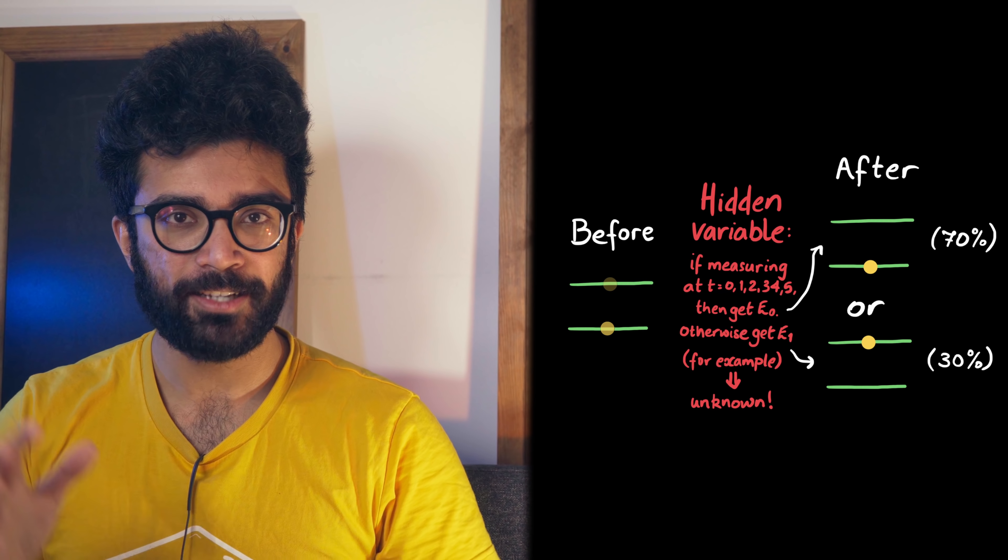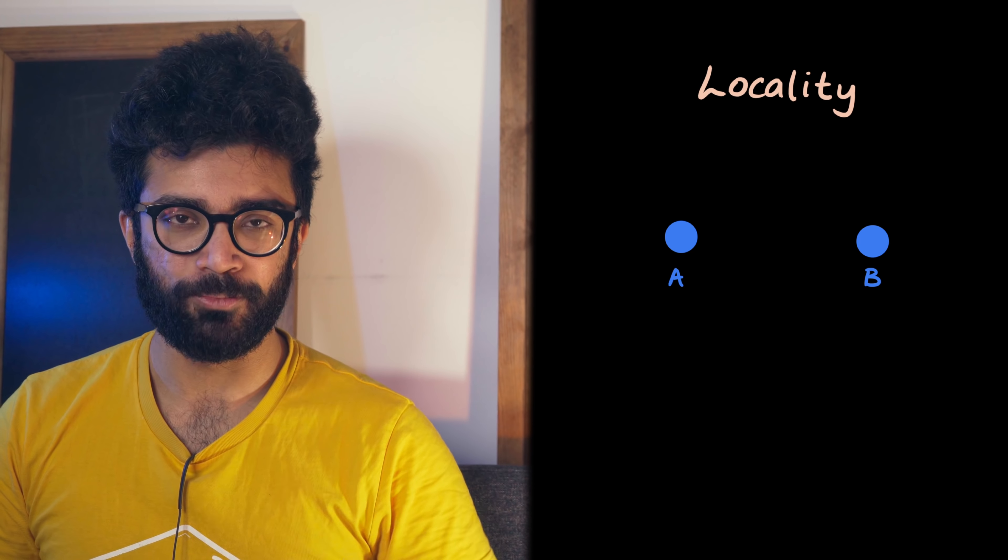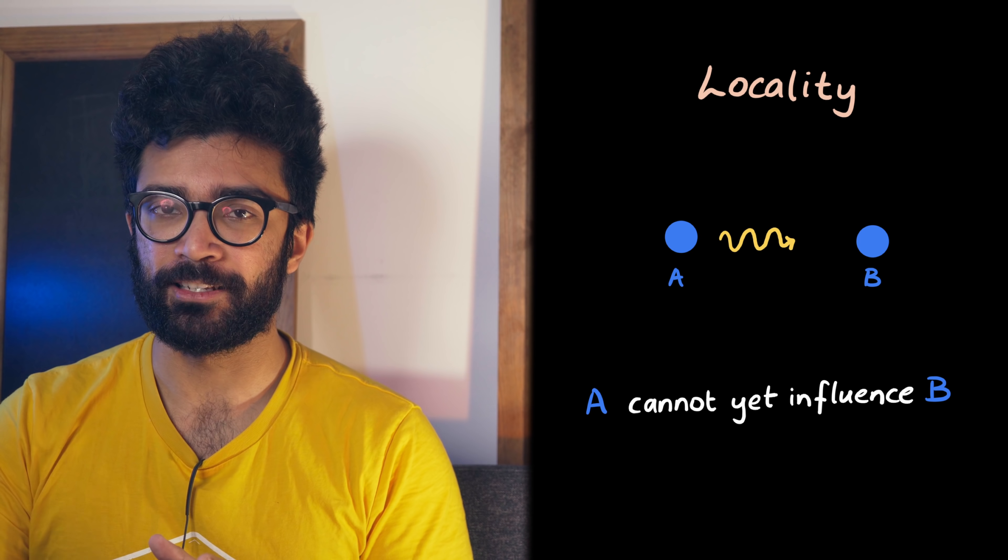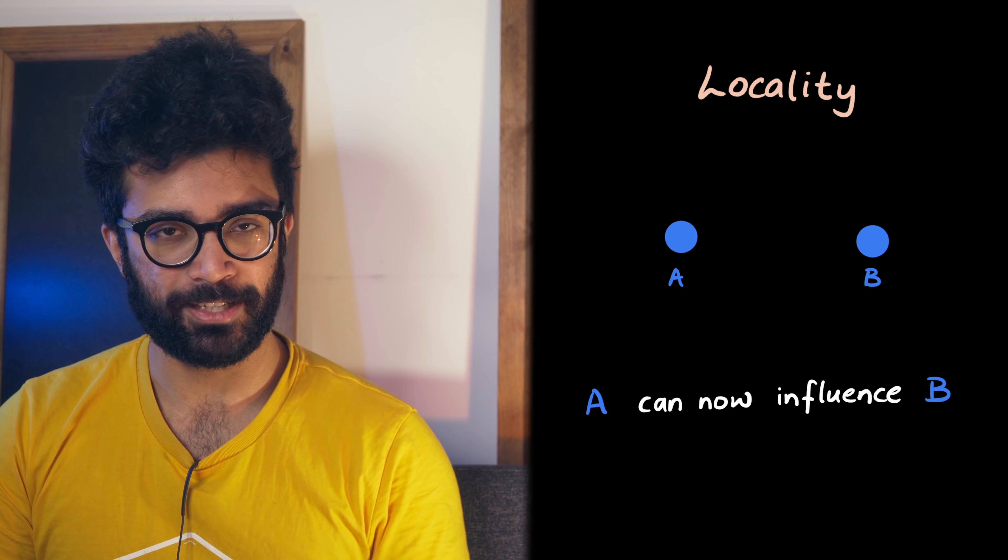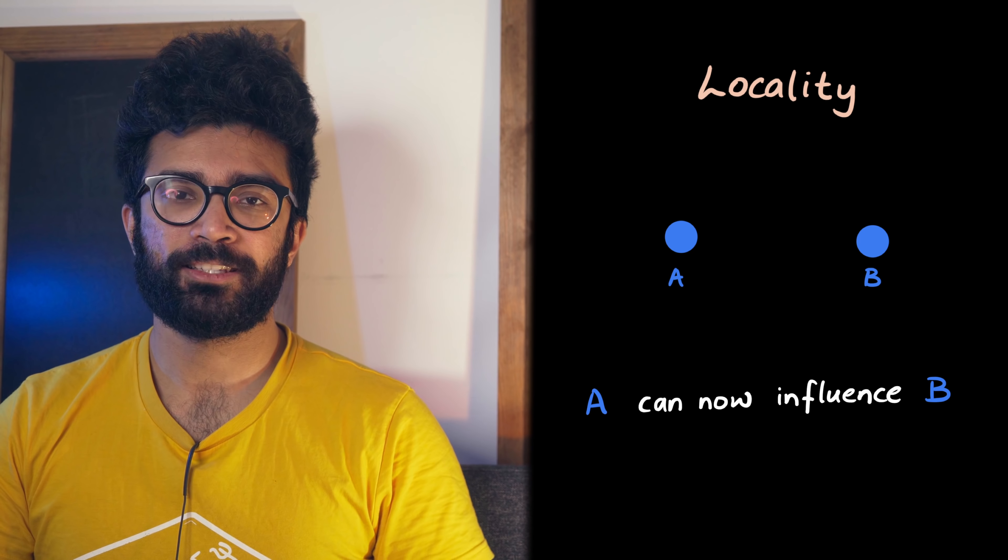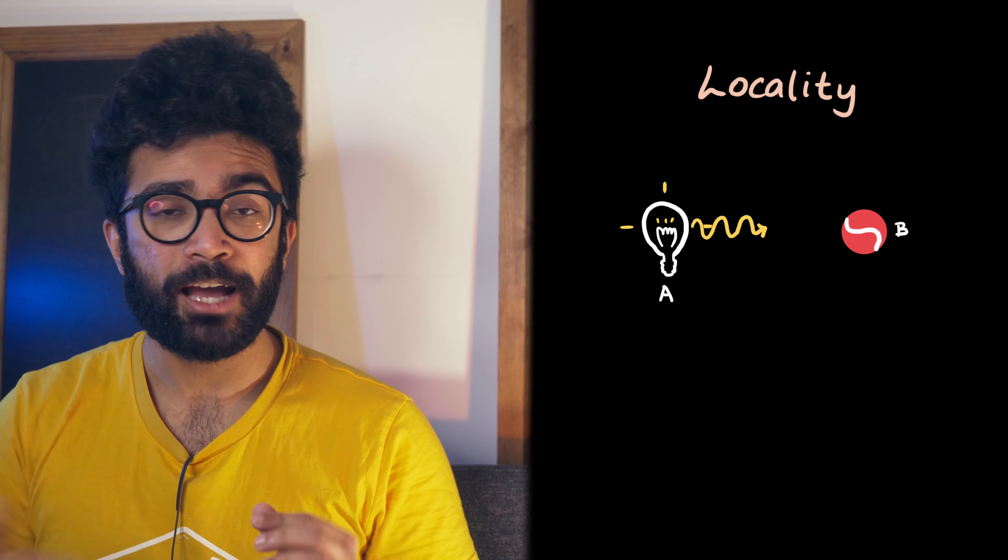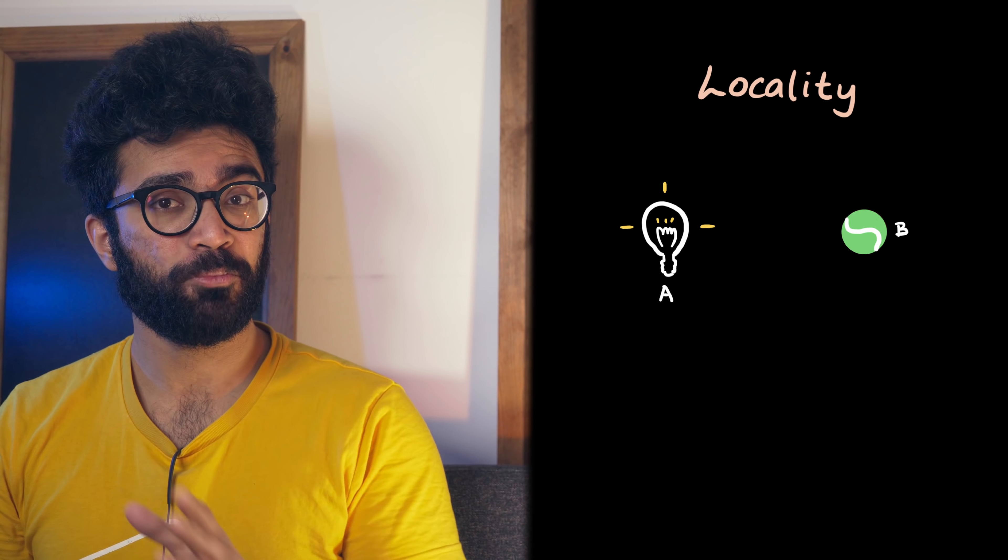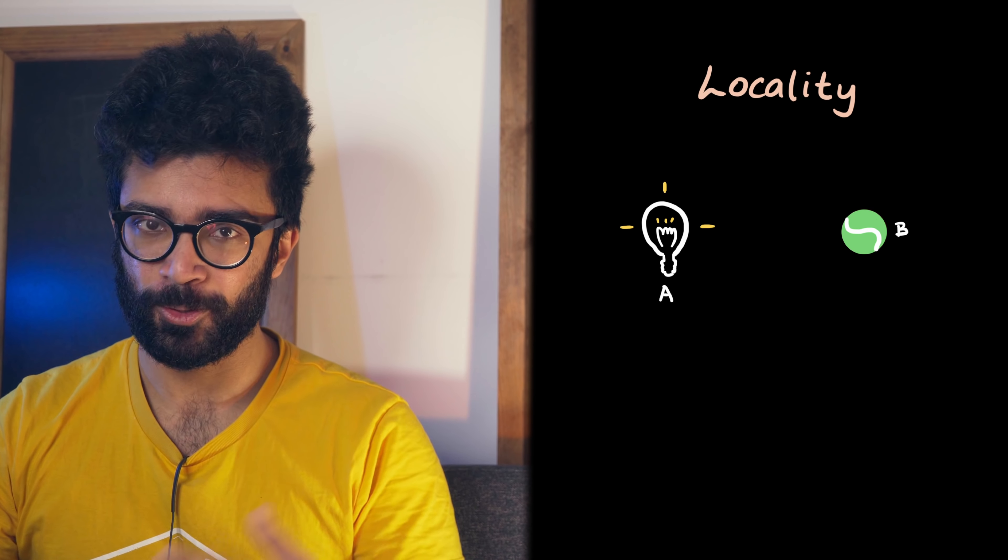As we mentioned earlier, Einstein was also keen about Quantum Mechanics being a local theory. The idea of locality is that an object or an event can only influence another object or event once we've allowed enough time for light or something slower to have passed from the first object to the second object. For example, let's imagine we have a ball that changes color when light falls on it. From the moment we switch on this light bulb, we have to allow enough time for light, the fastest moving thing in the universe, to get from the bulb to the ball before it can change color.